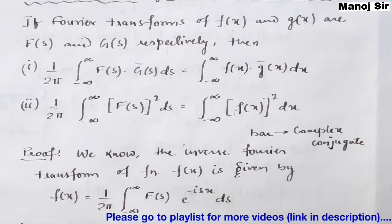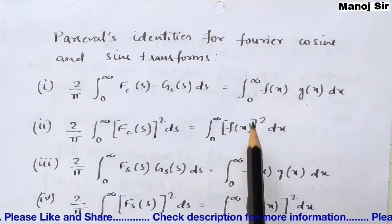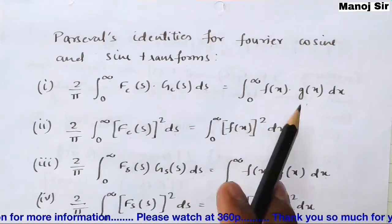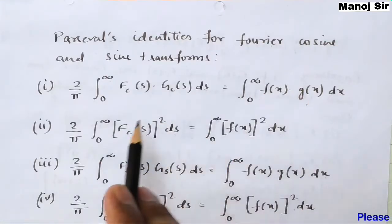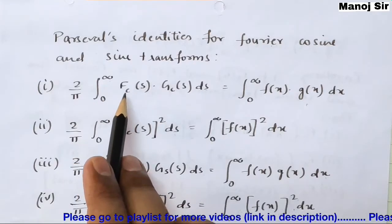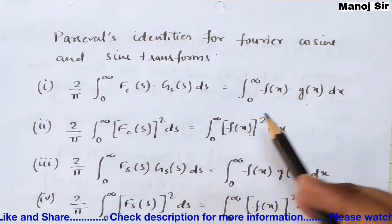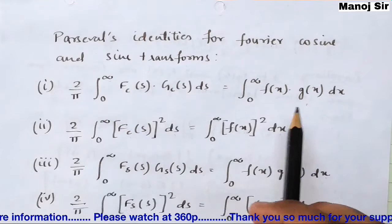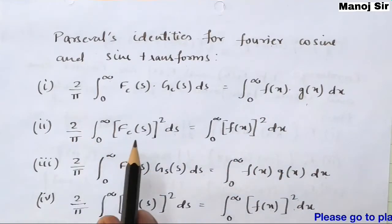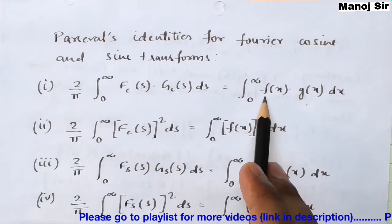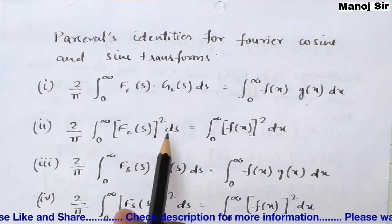Now we will see some important Fourier cosine and sine transform Parseval identities. For Fourier cosine transform, the first identity is: (2/π) ∫₀^∞ Fc(s) · Gc(s) ds = ∫₀^∞ f(x) · g(x) dx. The second cosine Parseval identity is: (2/π) ∫₀^∞ |Fc(s)|² ds = ∫₀^∞ |f(x)|² dx.